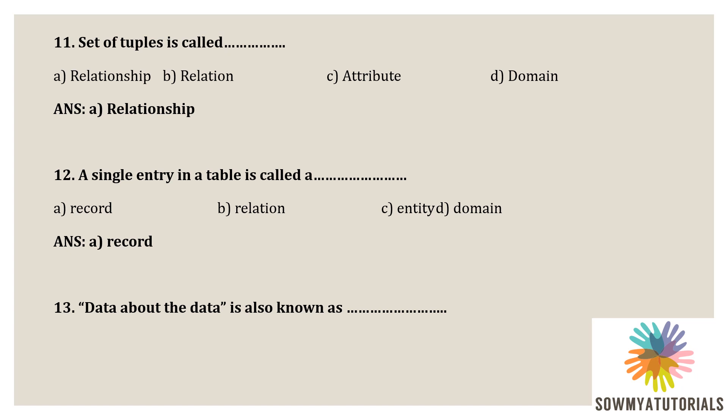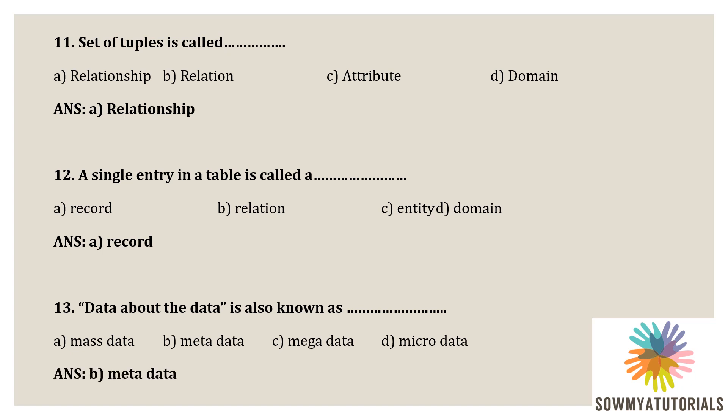Next question: data about the data is called what? Options are A) mass data, B) metadata, C) mega data, D) micro data. The correct answer is B — metadata. Metadata is data about data; it is the set of data that describes and gives information about another data.